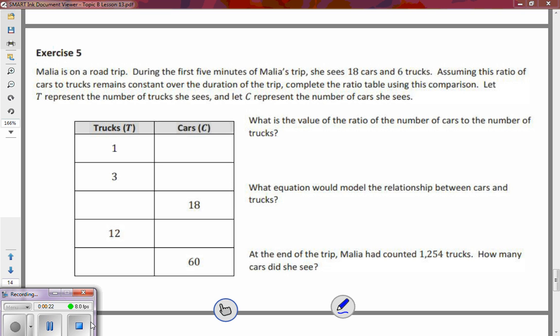We're going to start with the information from Exercise 5. Malia is on a road trip during the first five minutes of Malia's trip she sees 18 cars and six trucks, so right there's some information that we need to know.